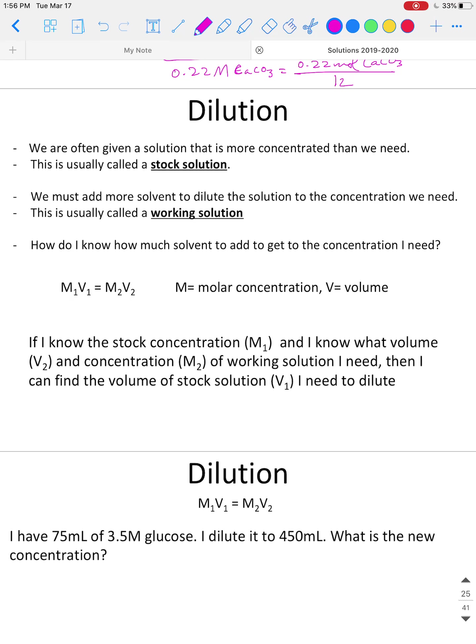If you're looking at this slide, what we start off with is a stock solution is one that is, keyword here, more concentrated than we really need. So what we have to do is we have to dilute the solution to the concentration we want. We call this the working solution. The working solution contains the concentration we want. The question then becomes, well, how much solvent do we need to add to the stock solution to get our working solution concentration?